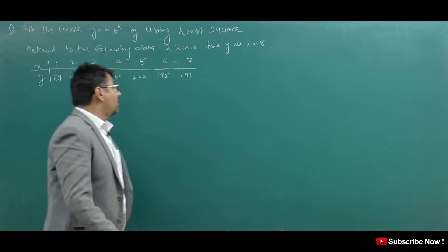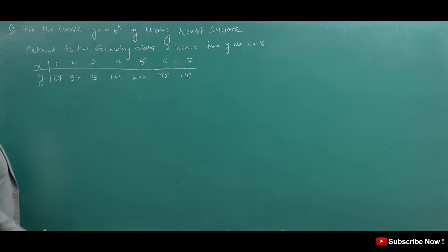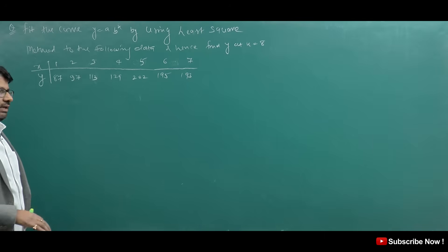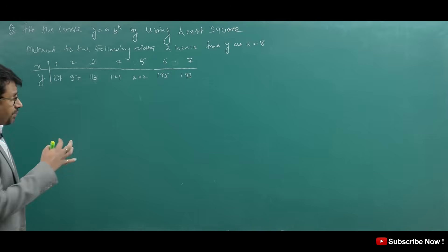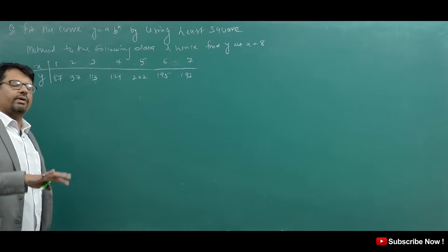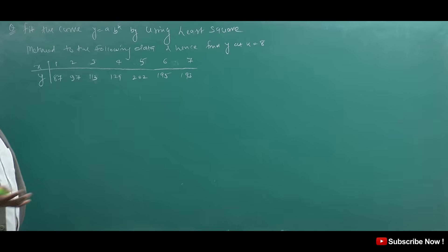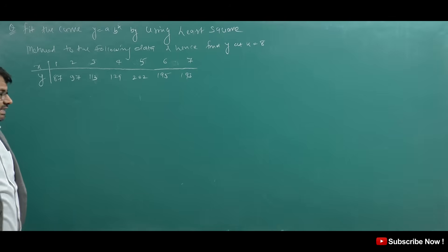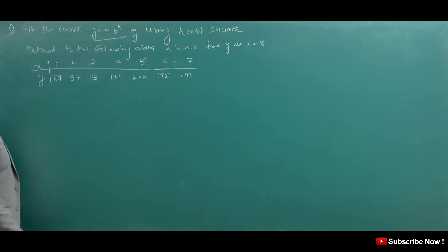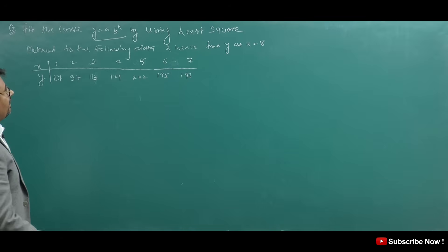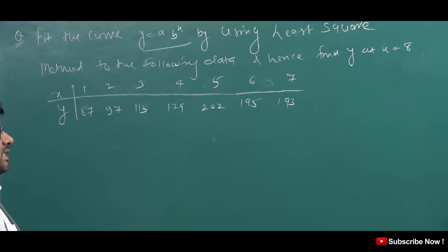Here I have given the question: fit the curve Y is equal to A into B power X using the least square method to the following data, and hence find the Y at X is equal to 8. In this video, I am going to explain how some special type functions are fitted to a curve.